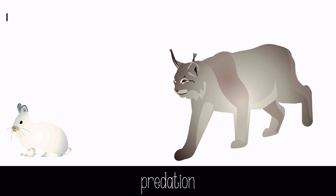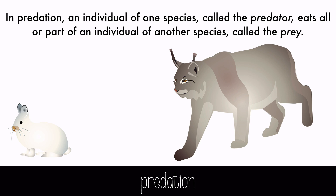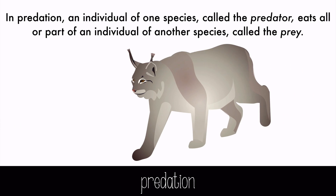In predation, an individual of one species, called the predator, eats all or part of an individual of another species, called the prey.